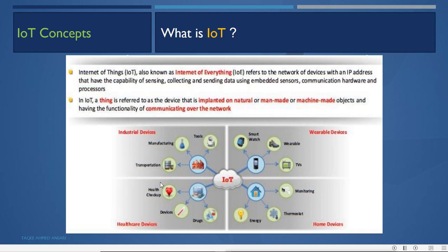IoT devices span many sectors. Industrial devices include manufacturing and transportation tools. Healthcare devices include health checkup devices and wearables. Consumer devices include smart watches, televisions, and home monitoring systems like CCTVs, thermostats, energy sensors, and smart light bulbs. All of these can use the network to sense, collect, and send data using embedded sensors and communication hardware.